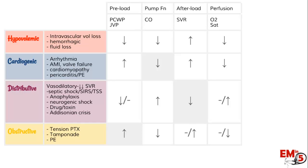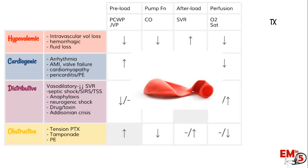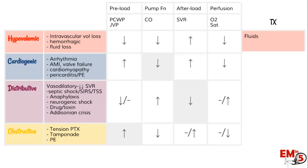Now let's talk about treatments for each of these. For our hypovolemic patient, they need volume — fluids, whether that's normal saline or red blood cells — in order to replete their intravascular volume loss.